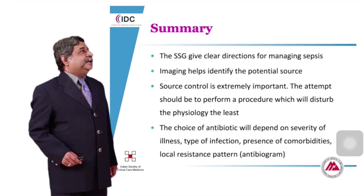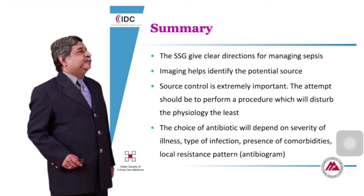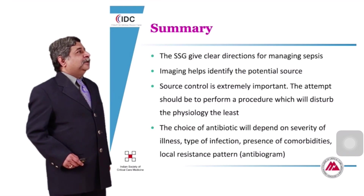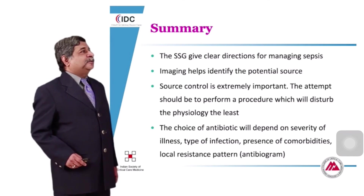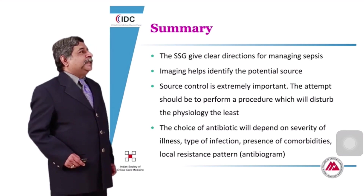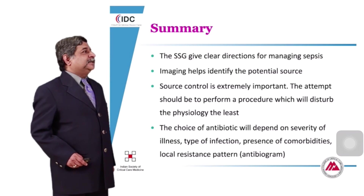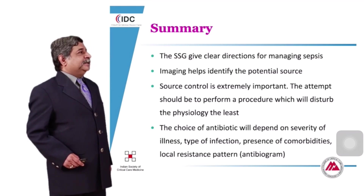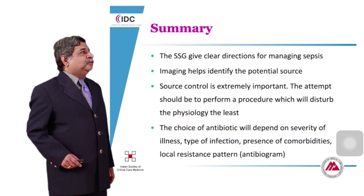In summary, the Surviving Sepsis guidelines give clear directions for managing sepsis. Imaging helps identify the potential source and should be performed according to the suspected organ involved. Source control is very important — the attempt should be to use the procedure that disturbs physiology the least, as these patients are very sensitive to even the smallest physiological damage. The choice of antibiotic depends on severity of illness, type of infection, presence of comorbidities, and most importantly, the local resistance pattern — the antibiogram provided by your microbiology department.